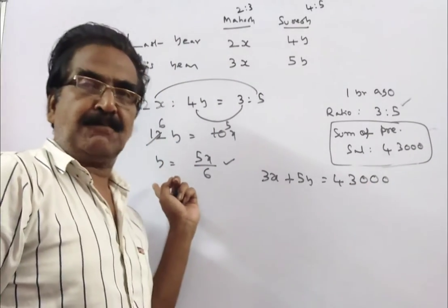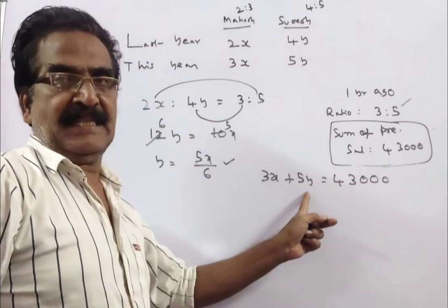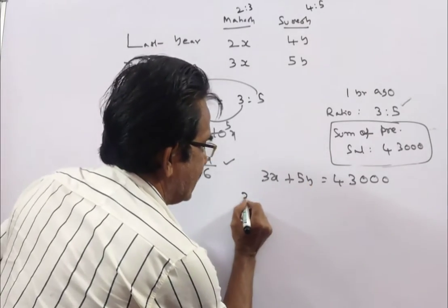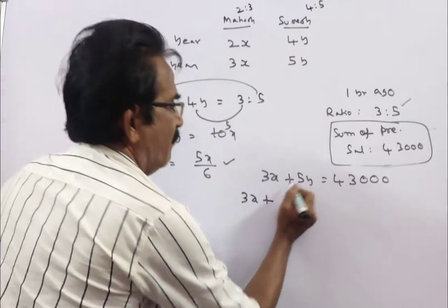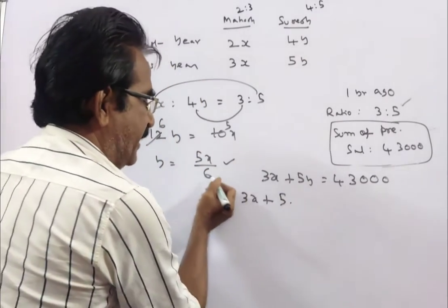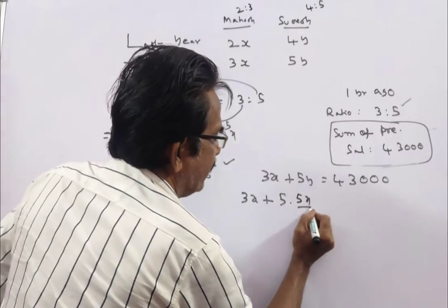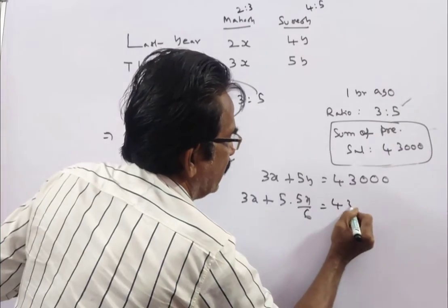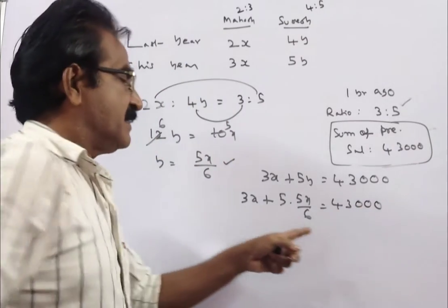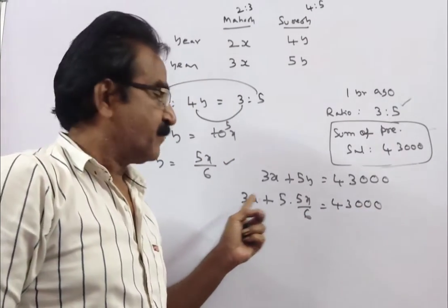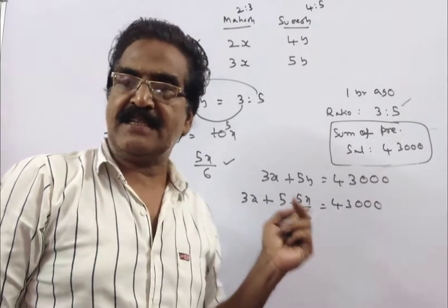We can substitute y in this equation. 3x plus 5 into 5x by 6 equals 43,000. Multiplying by 6, we get 18x plus 25x.